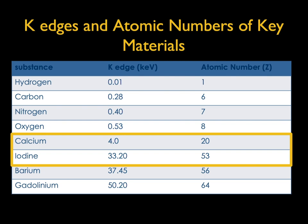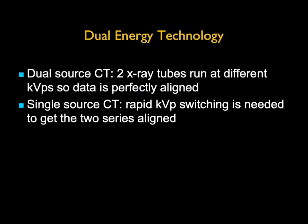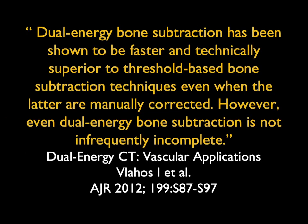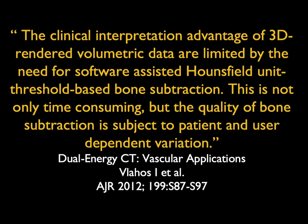The K-edge of calcium is 4 keV versus 33 keV for iodine, because of atomic numbers 20 versus 53 — and that spread is what you need. You can do dual energy with two X-ray tubes like Siemens, or one X-ray tube like GE. Both have advantages and disadvantages, but both can give you quality studies. With dual energy, particularly as you lower the kVp, iodinated contrast shows approximately an 80% increase in attenuation at 80 kVp compared to 140. So at lower kVp, you can get by with less contrast and less dose.